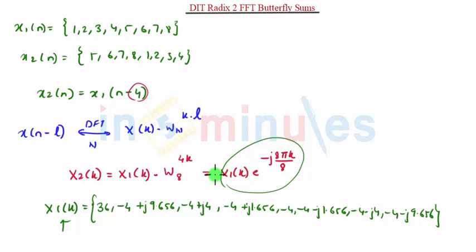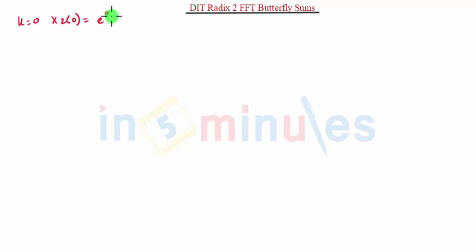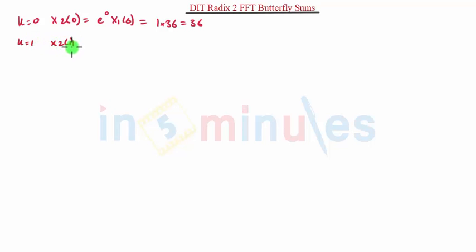Let us see how the equation changes for different values of k. When k = 0: X2(0) = e raised to 0 times X1(0) = 1 × 36 = 36. For k = 1: X2(1) = e raised to minus j·π times X1(1) = (cos π - j·sin π)(−4 + j·9.656). Since cos π = −1 and sin π = 0, this gives −1 × (−4 + j·9.656).